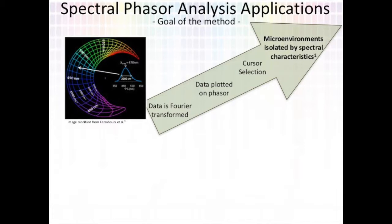After data collection through the lambda scan, the data is Fourier transformed and plotted onto a phasor plot. This is where spectral analysis becomes spectral phasor analysis. The spectral profile of each of the pixels in the image is plotted onto the 360-degree phasor plot. The lambda max values are plotted descending in an anti-clockwise direction. The spectral width values are plotted increasing into the center of the phasor plot. The closer towards the center of the phasor we get, the broader the width of the spectral profile.